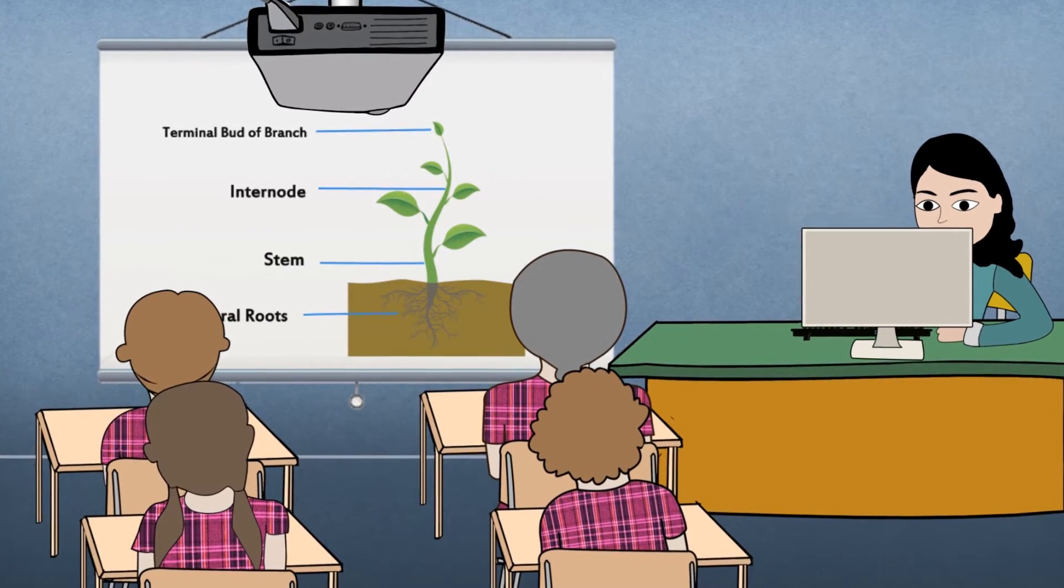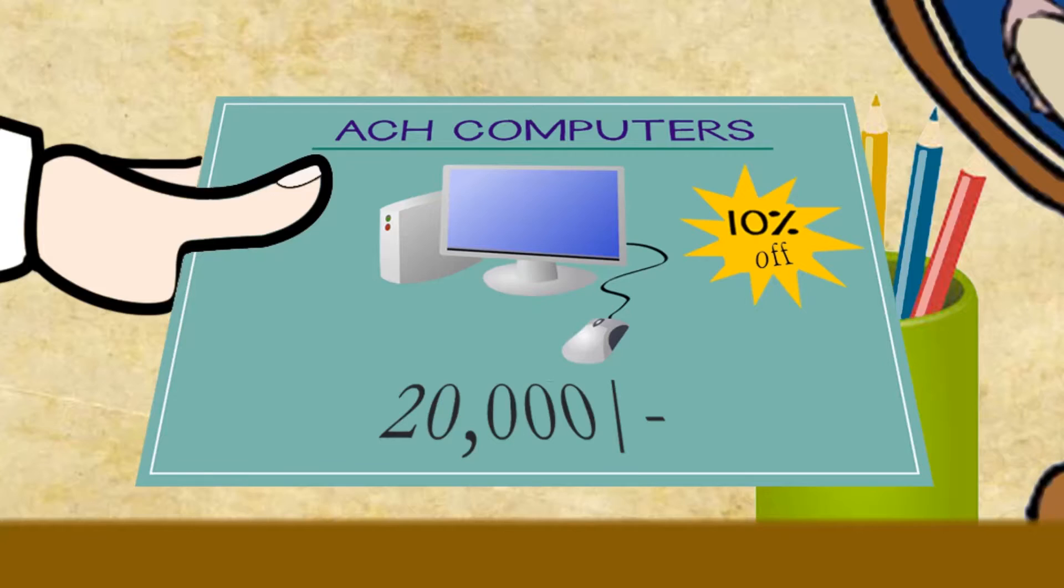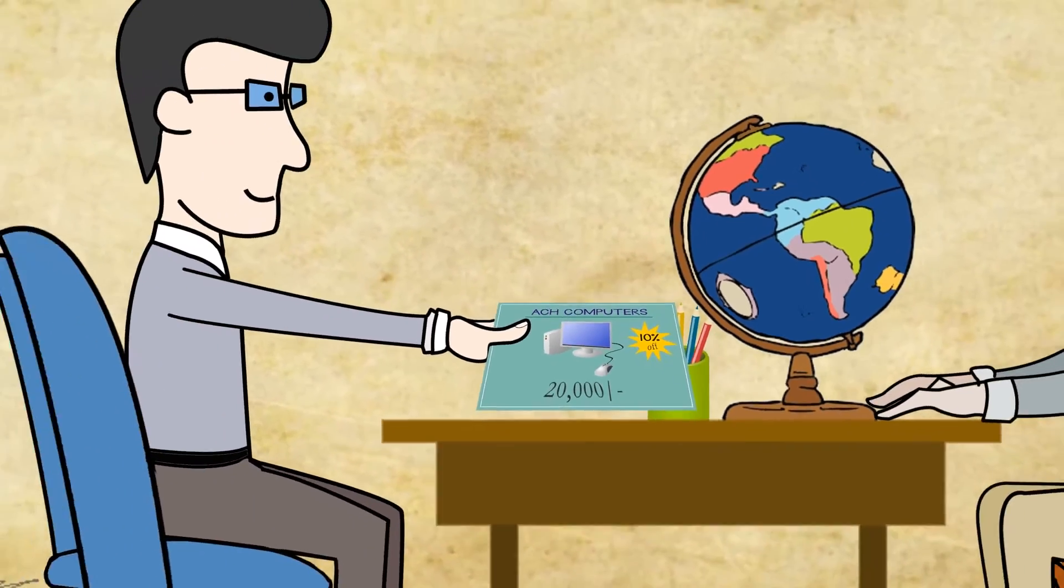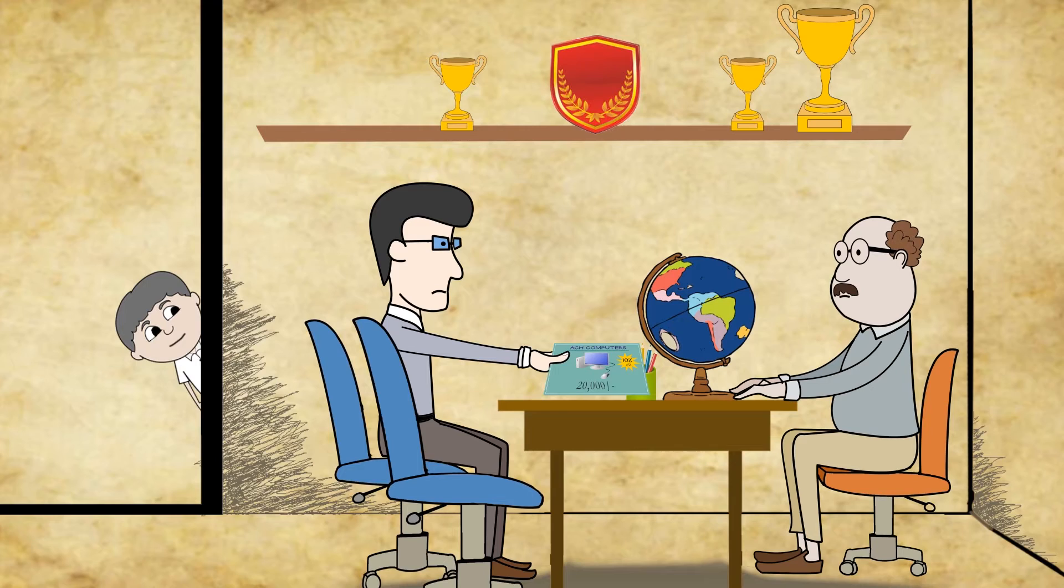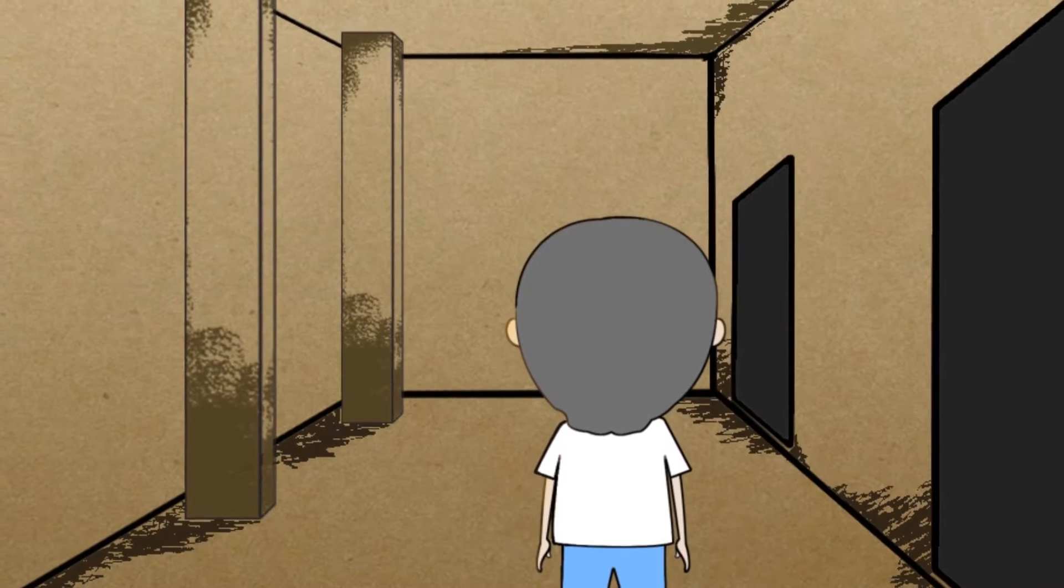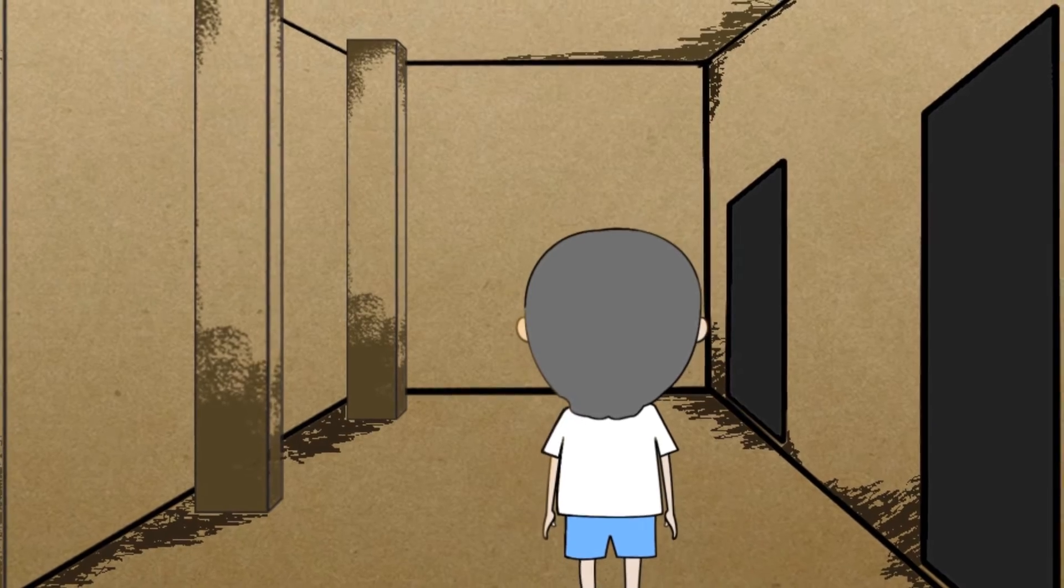So why this imbalance? Let's take a look. A brand new computer costs around 20,000 rupees, making it difficult for schools with little funding to afford it, depriving Jay and millions of kids like him the chance to a brighter future.